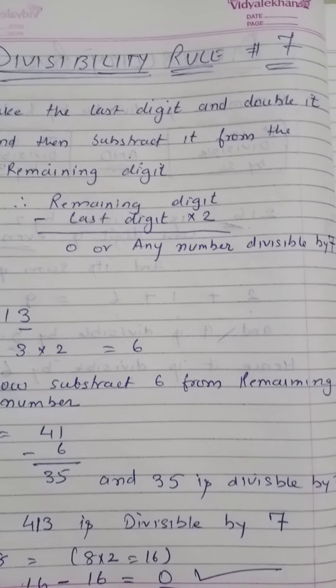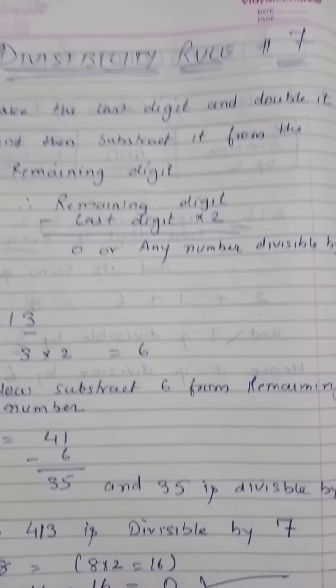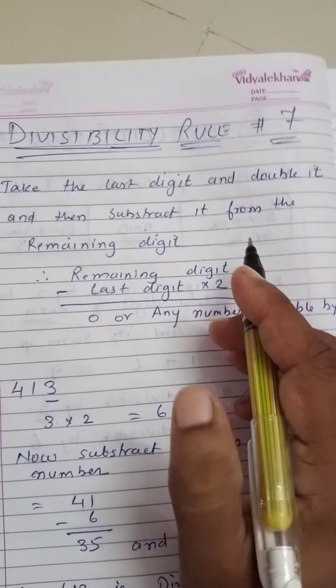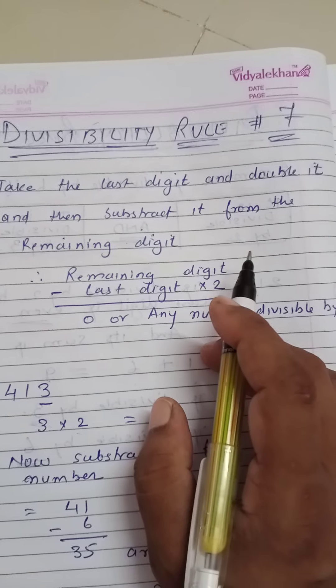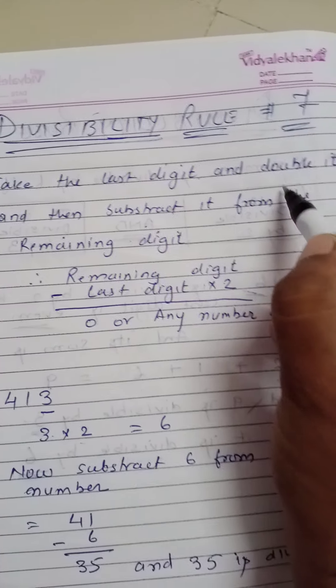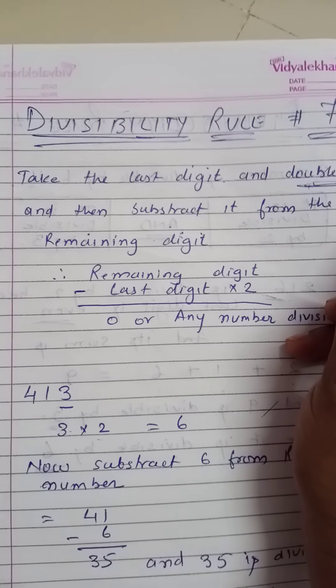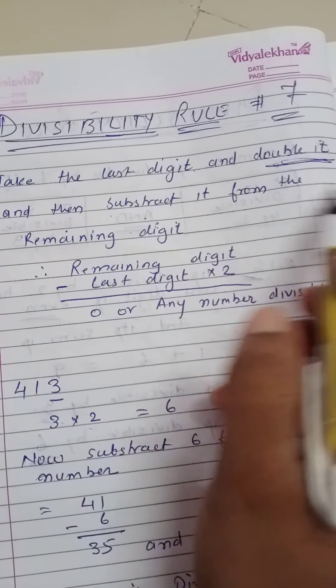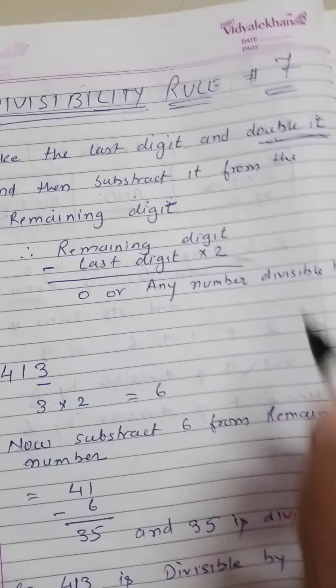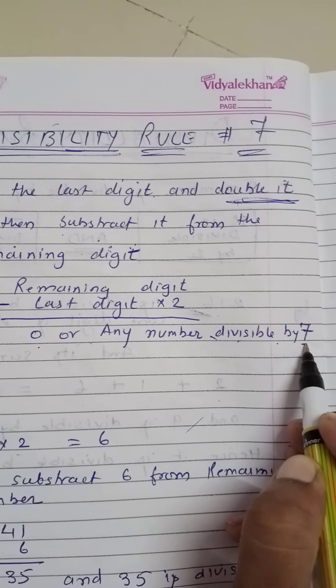Now the divisibility rule of 7. In this rule, you take the last digit of the given number and double it — that means multiply by 2. Then subtract that result from the remaining digits. If the answer is equal to 0 or any number which is divisible by 7, then we can say that the divisibility rule of 7 applies.